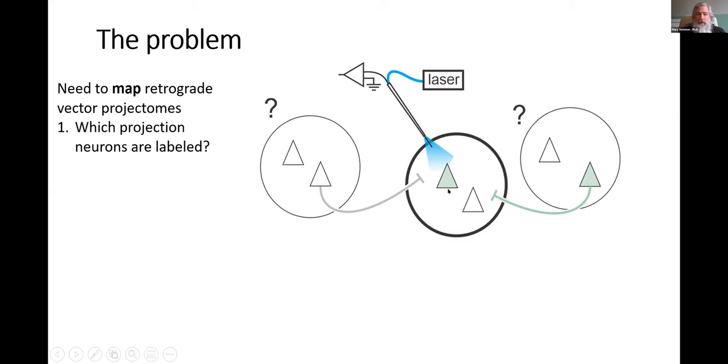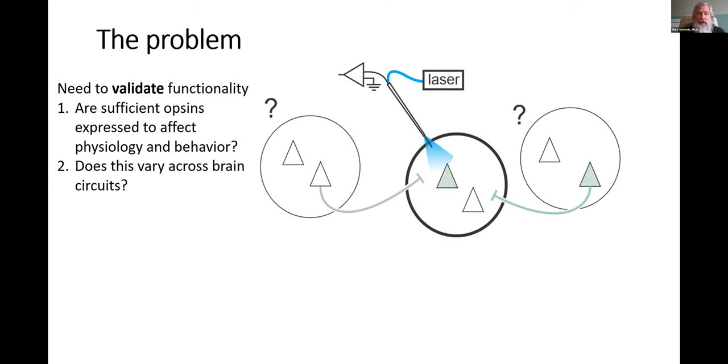In terms of mapping the retrograde vector projectomes, we need to know when you inject in a certain brain area, which projection neurons in other brain areas are labeled, but which are missed by this particular vector. Does this vary across the retrograde vectors? For example, rAAV2-retro is one example. There are newer ones like Neuret, which is a lentivirus. Finally, we need to validate the functionality of the whole process. Is there enough opsin expressed to actually make this work for experiments?